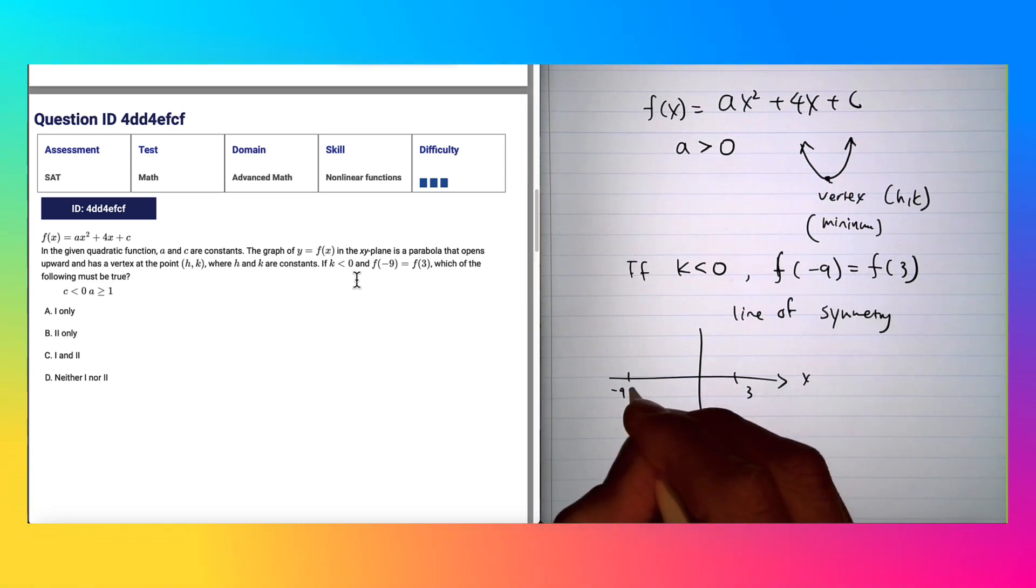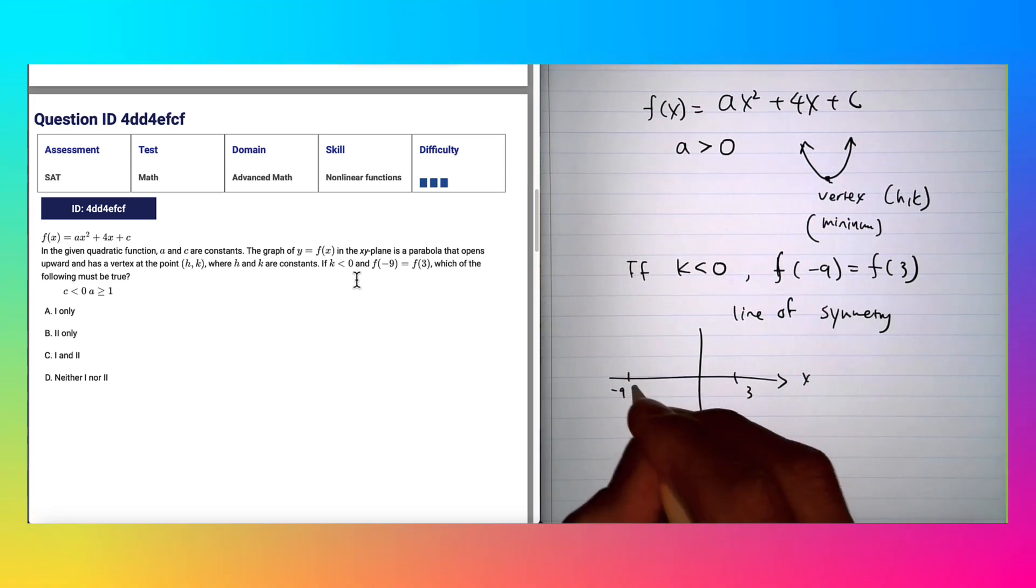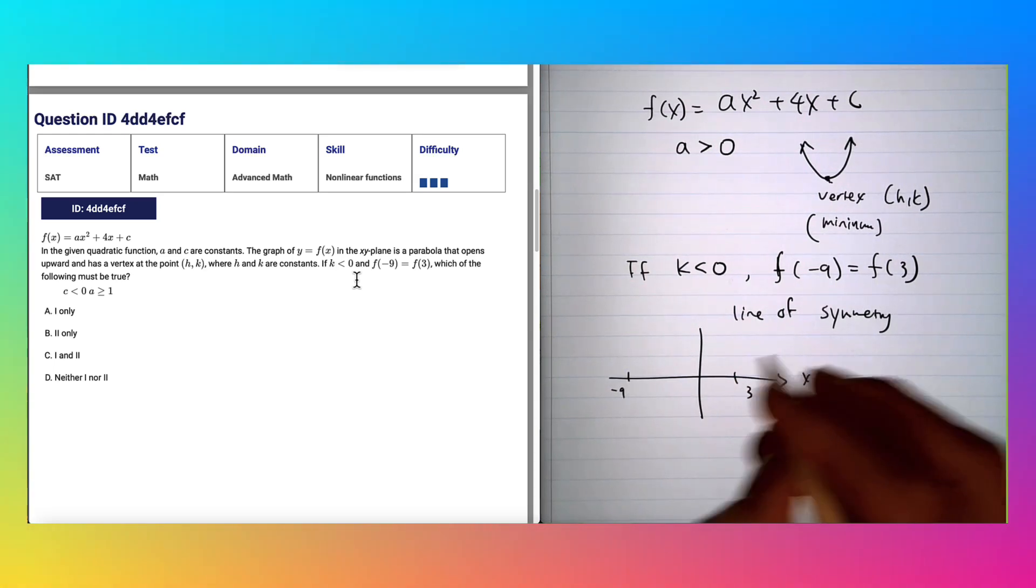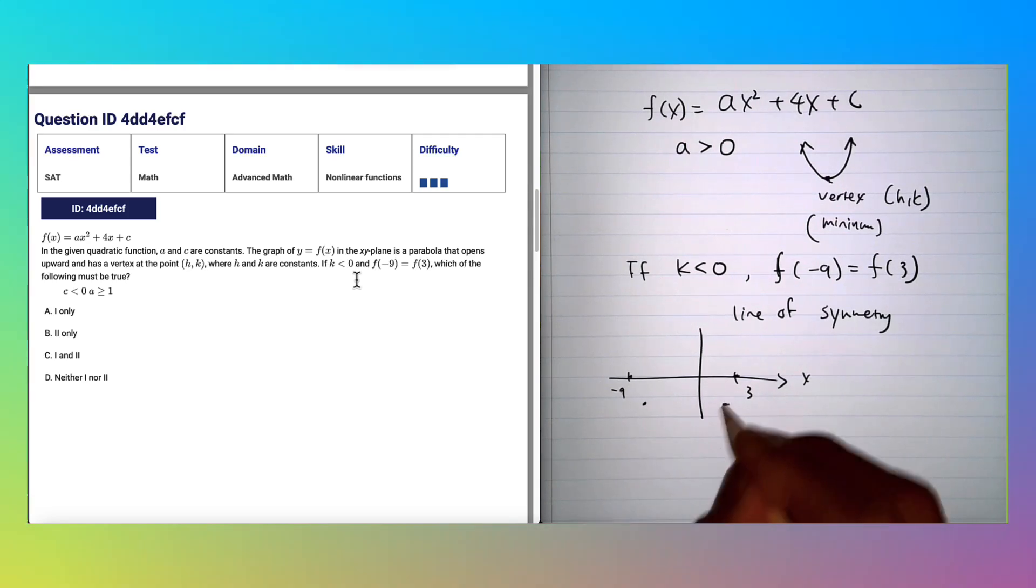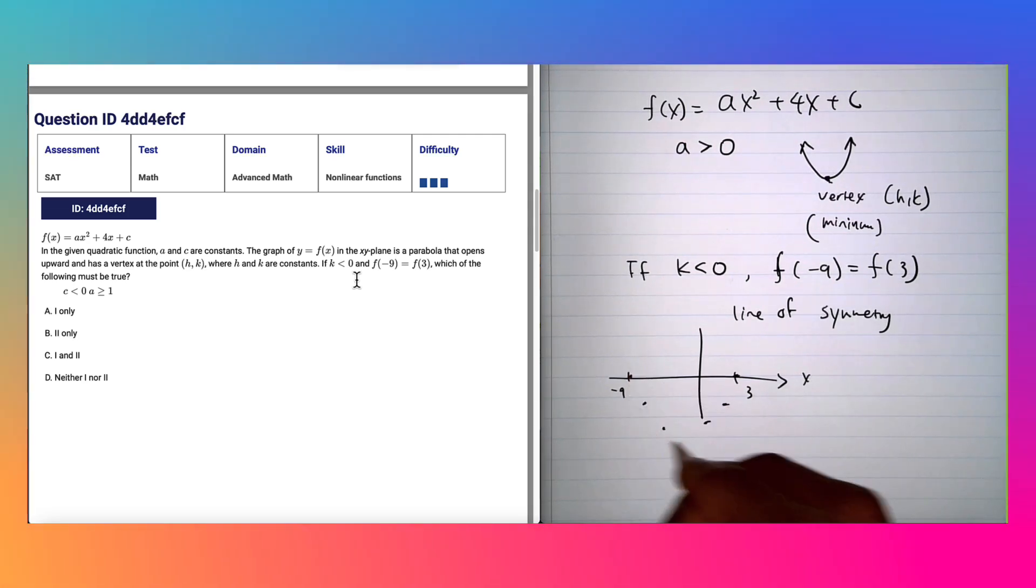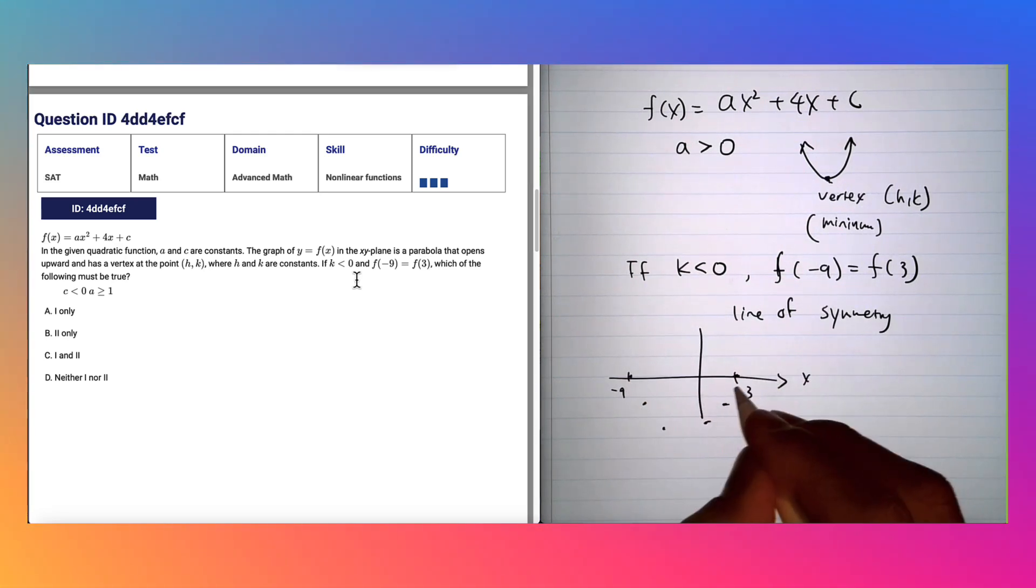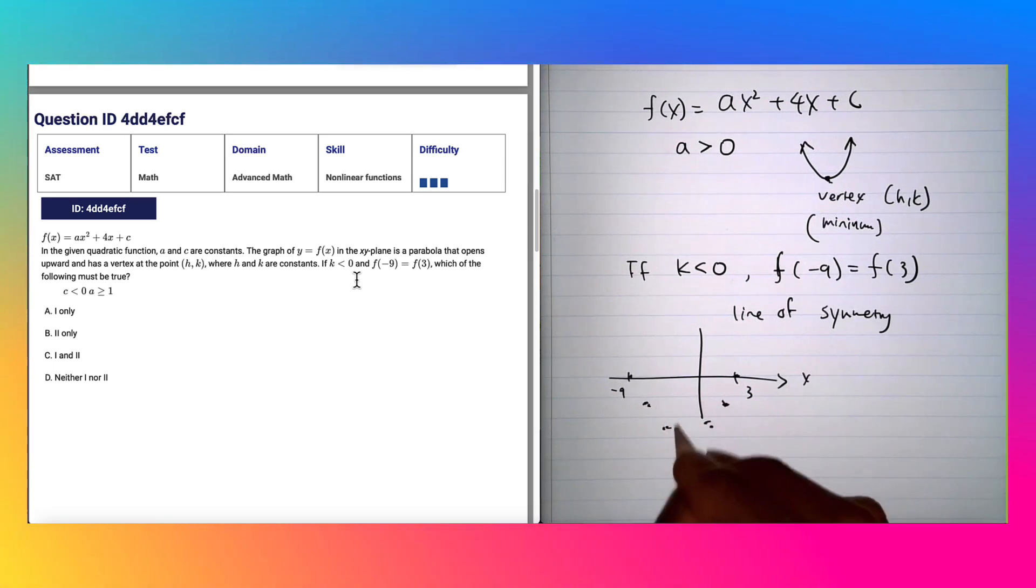Whether the vertex is below or on the x-axis for -9 and 3, all your points are going to be symmetrical to the line of symmetry. And that line of symmetry is going to be the exact average of any two same y-points, whether I have something like these two points or those two points. It will be the midpoint or average.